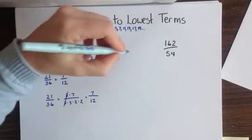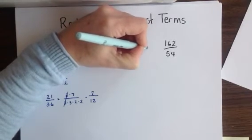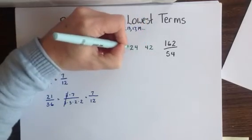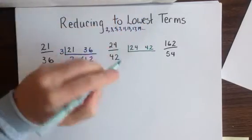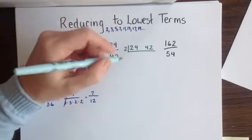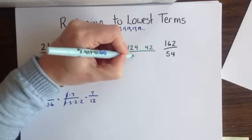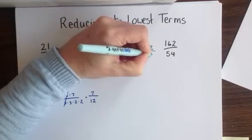24 forty-seconds. To reduce that to lowest terms, I'm going to put the 24 and the 42 into the division machine. I start with 2 since both my numerator and denominator are even numbers. It fits into 24 twelve times and into 42 twenty-one times.